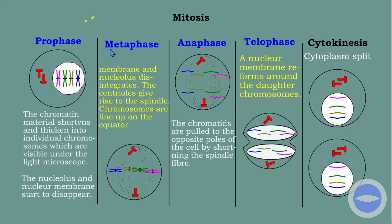During metaphase, the nuclear membrane and nucleolus completely disappear. The centrioles give rise to the spindle fiber, and the chromosomes are lined up at the equator. The centromere moves to the center, and the spindle fiber is produced by the centrosomes. These spindle fibers attach themselves to the centromere of each chromosome during metaphase.